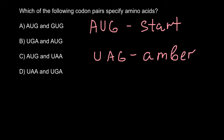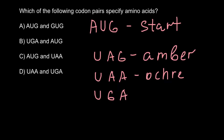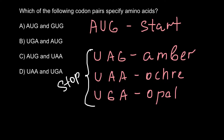The second stop codon discovered was U, A, A. In order to distinguish it from the first stop codon, it was also given a color code — and this is ochre. The last stop codon sequence is U, G, A, and the color code for this sequence is opal. So you have to know that these three sequences — UAG, UAA, and UGA — stand for stop codons.